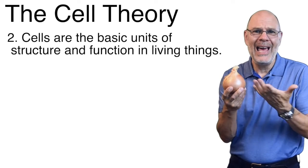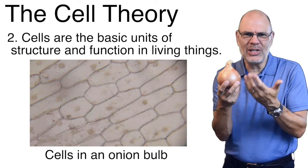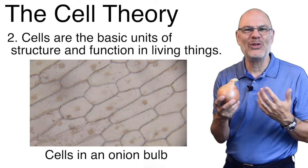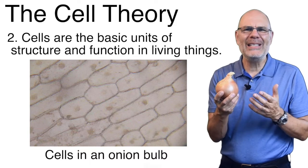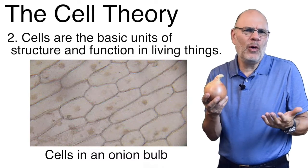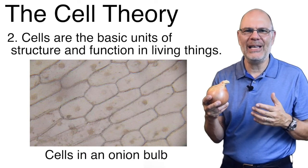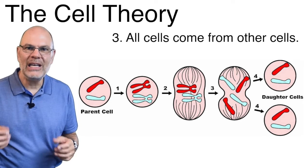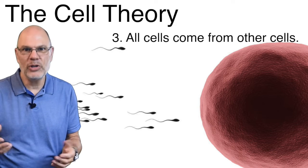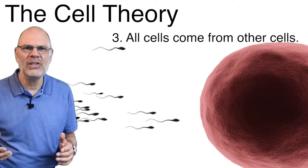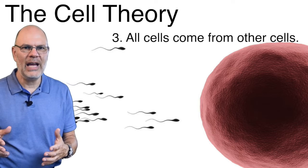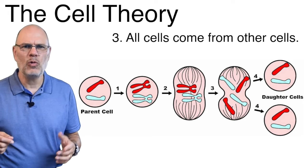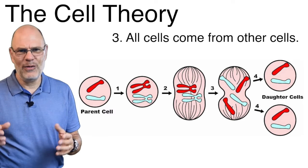Why am I holding an onion? Because how does an onion store food? By cells like the ones in this onion bulb. The second part of the cell theory is that cells are the basic units of structure and function in living things. What that means is that all of life's functions are performed by cells along with the higher level structures that cells make up. The third idea is that all cells come from other cells. Every cell in your body is a descendant of the fertilized egg cell, also called a zygote, that you started life as. These cells trace back to a sperm cell and an egg cell that were made by other cells in your mother and father's bodies, going back to your grandparents and great-grandparents all the way back to the first cells.